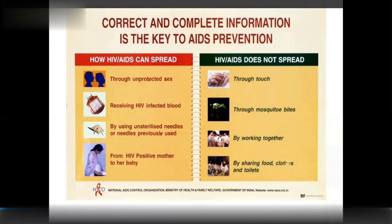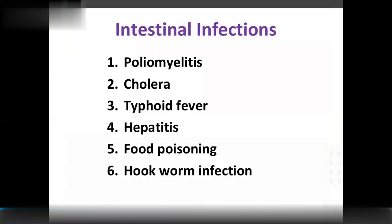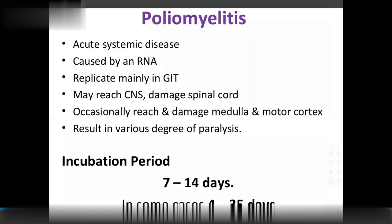It is important to understand when HIV can spread and when it cannot spread. Next: intestinal infection — poliomyelitis. This is an acute systemic disease caused by an RNA virus (poliovirus) that replicates mainly in the gastrointestinal tract and may reach the CNS, damaging the spinal cord, and occasionally the medulla and motor cortex.